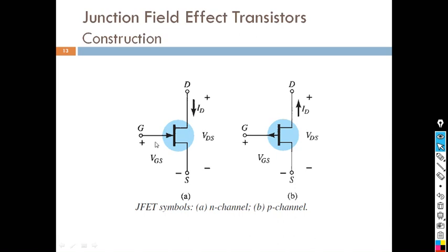This is the symbol for N channel JFET and P channel JFET. In the N channel symbol, the arrow points towards the gate. In the P channel symbol, the arrow points away from the gate. This is how we differentiate between N channel and P channel. ID is the drain current, VDS is the potential between drain and source, and VGS is the potential between gate and source.